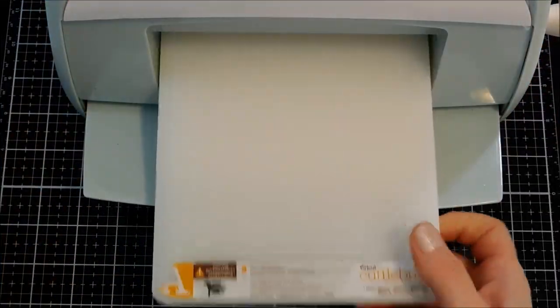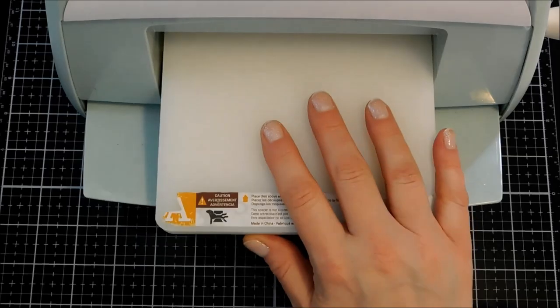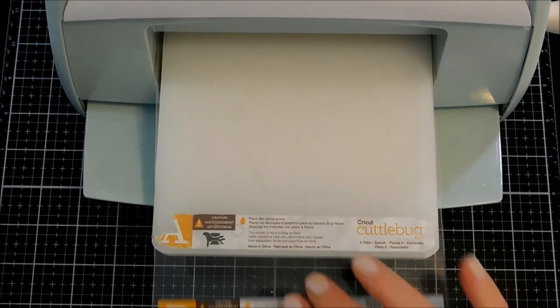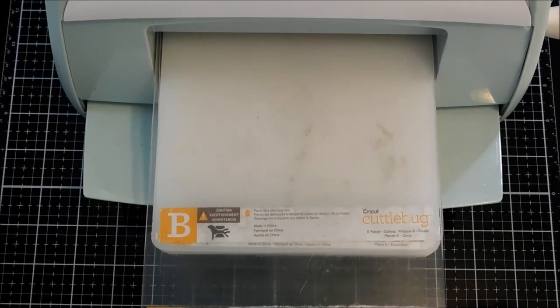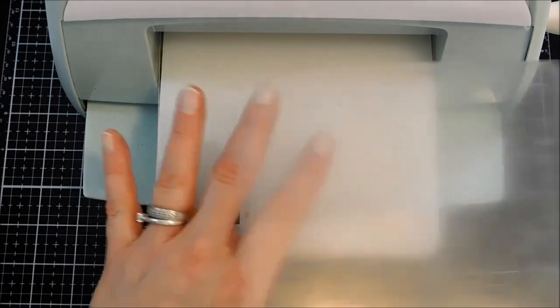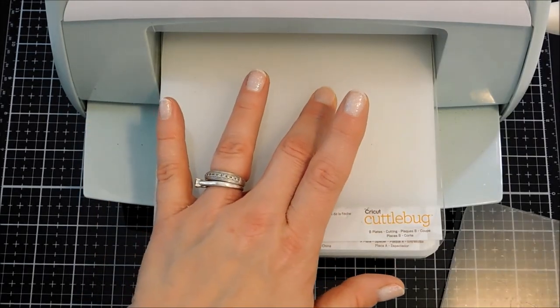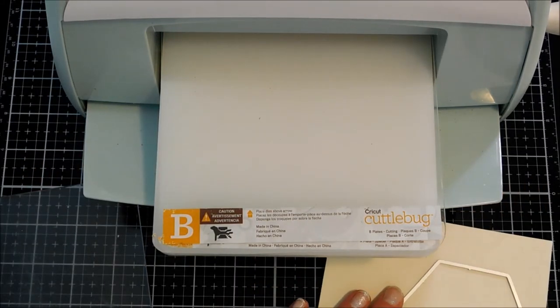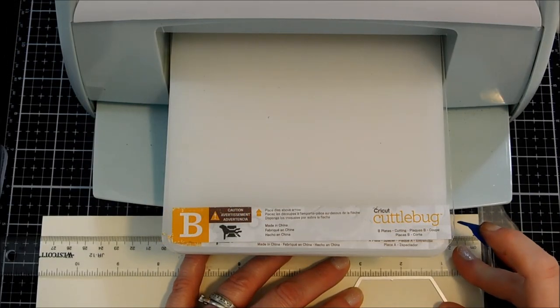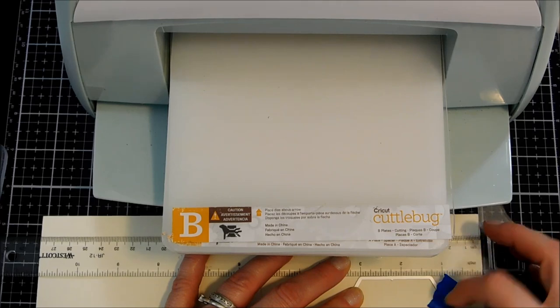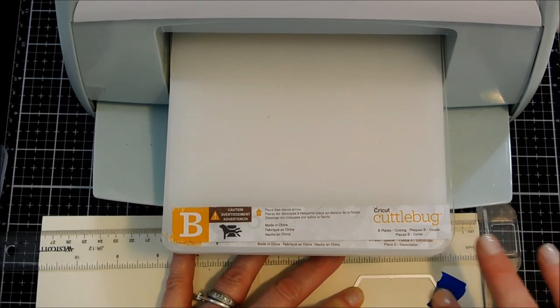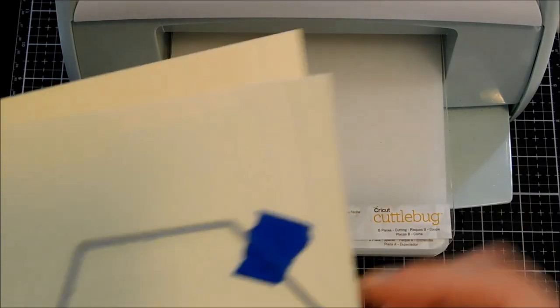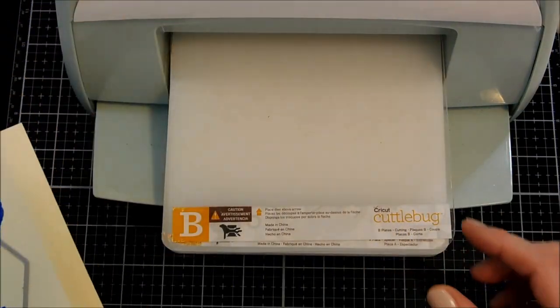For my die-cutting sandwich in my Cuddlebug anyway, it's going to differ depending on your machine, but mine would be the A plate, the B plate, and then the C plate on top of that. In between these two would go my cardstock and my die. First I'm going to place that where I want it on my card front. I'm using my T square ruler because I don't want my honeycomb to come out wonky, and from this first hexagon, everything will be based off of that.